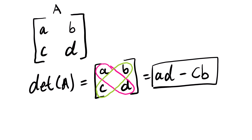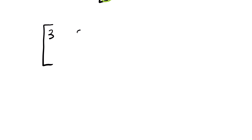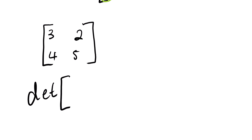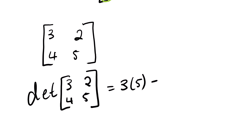Now let's say we have a matrix with defined elements like 3, 2, 4, 5. What is the determinant of this matrix? The determinant will be 3 multiplied by 5, minus 4 multiplied by 2. 3 multiplied by 5 is 15, minus 4 multiplied by 2 is 8. And then the determinant of this matrix is 7.